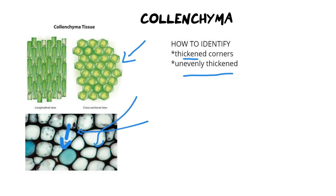Our final ground tissue is sclerenchyma. Sclerenchyma is the thickest of the tissues. This one is sometimes confused with colenchyma, but you've got to look out for one main important detail: when trying to identify sclerenchyma, the walls are evenly thickened. If you look at the micrograph you can see the walls are much more evenly thickened all the way around — it's not slightly thinner on one side and thicker on the other as we saw in colenchyma. This is even more clearly seen in the diagram where the thickened walls make a more geometric, uniform pattern.